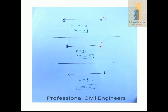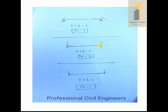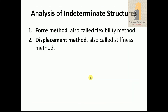So the degree of freedom for a simply supported beam equals three. For a cantilever beam, at the free end there are three displacements and at the fixed support there is zero displacement, so DK = 3. For a fixed beam, there is no displacement and no deflection, so DK = 0.